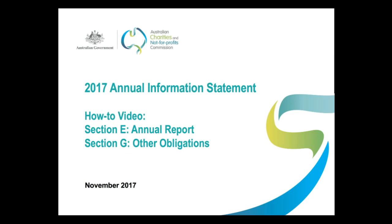Hi and welcome. This video is designed to help you fill in Sections E and G of your 2017 Annual Information Statement. Section E asks charities to upload their annual report, while Section G covers a number of other obligations, including updating or changing a charity's responsible persons, governing documents and other details.